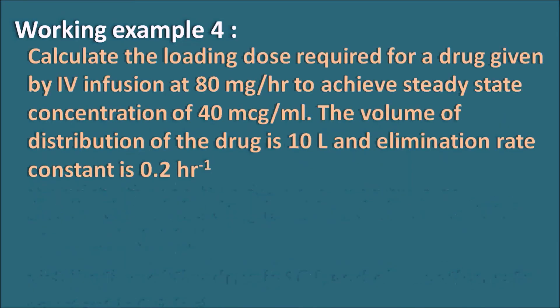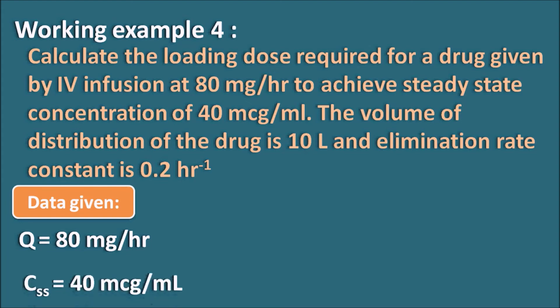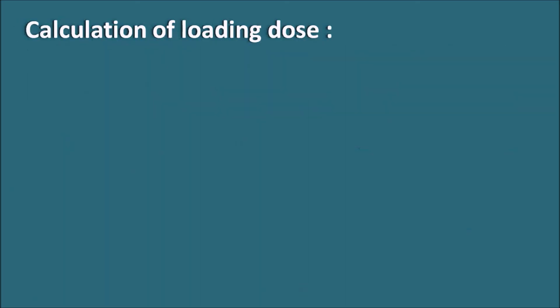Working example four: Calculate the loading dose required for a drug given by IV infusion at 80 mg per hour to achieve a steady state concentration of 40 microgram per ml. The volume of distribution of the drug is 10 liters and the elimination rate constant is 0.2 hour⁻¹. Data given: Q = 80 mg per hour, CSS = 40 microgram per ml, Vd = 10 liters, and Ke = 0.2 hour⁻¹. We have to calculate the loading dose required.